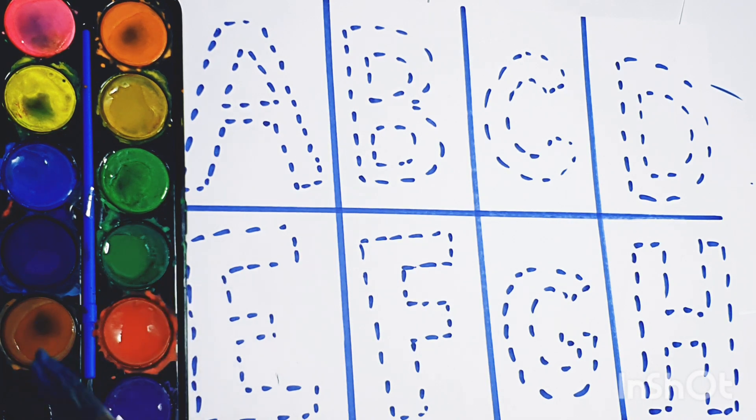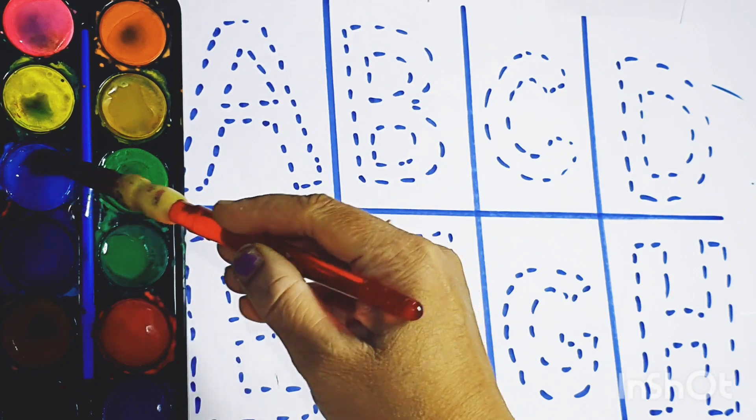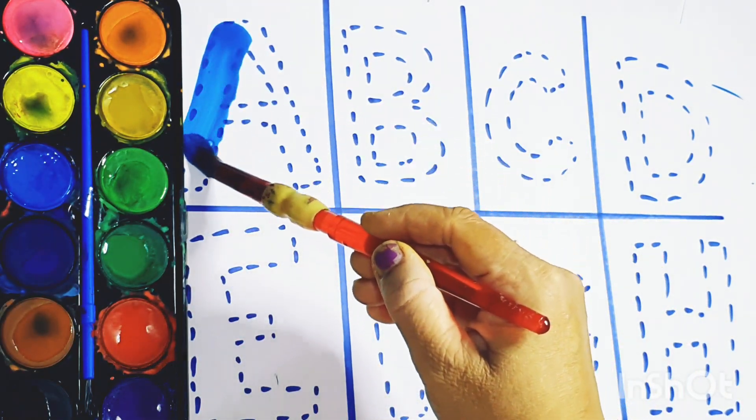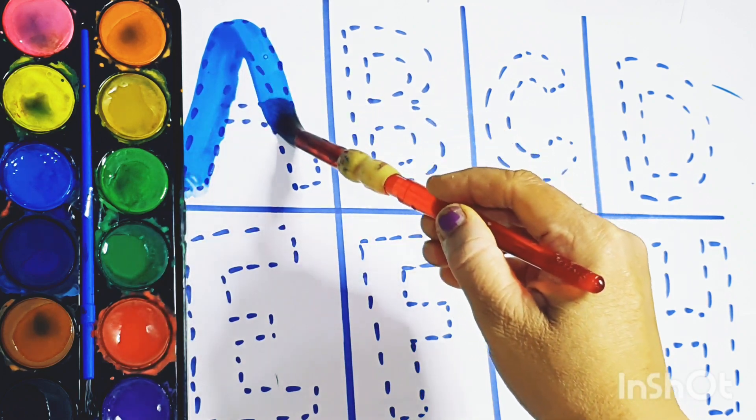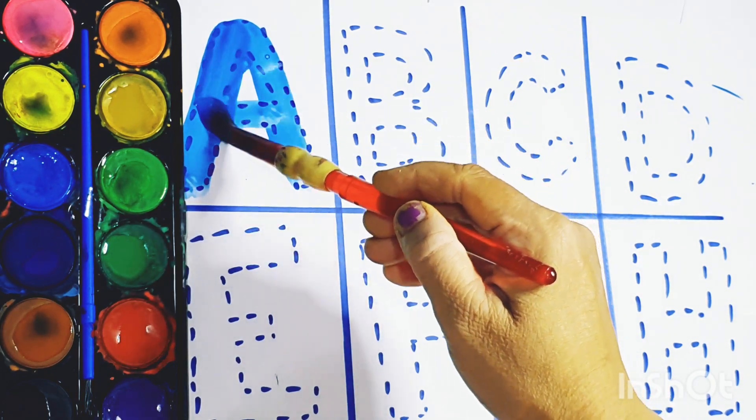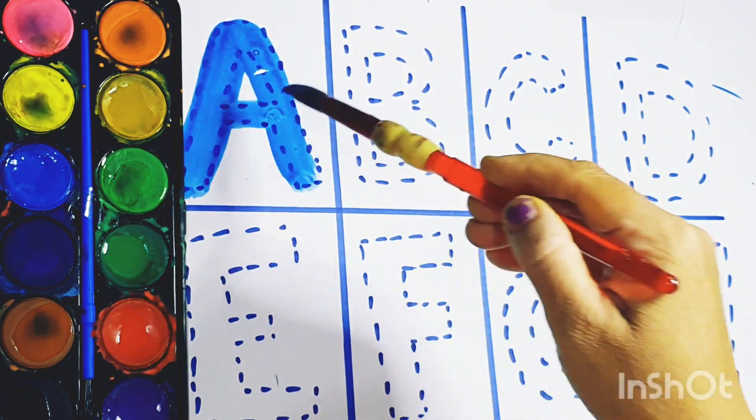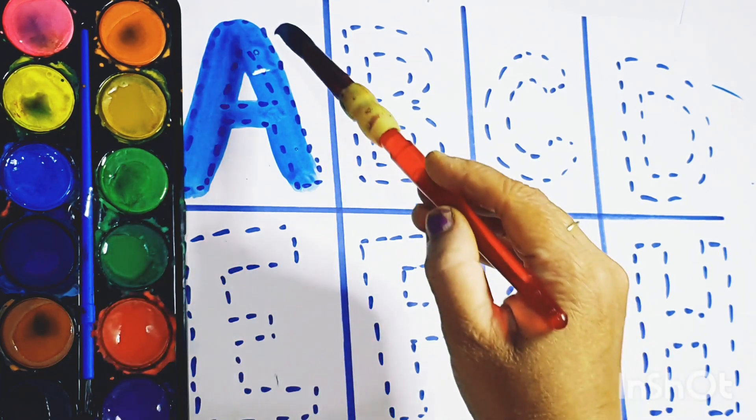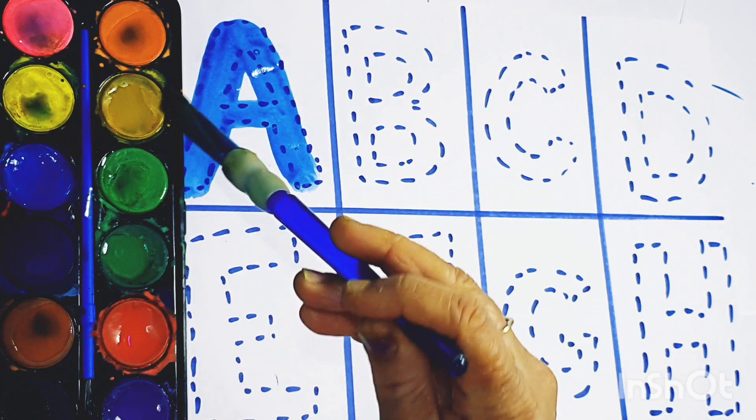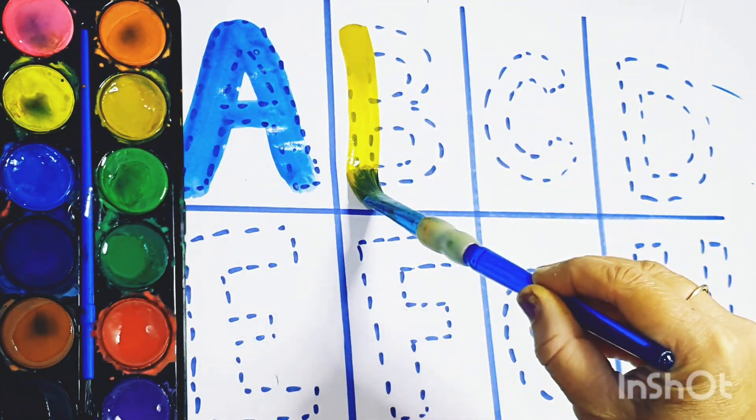We start with blue color. A. A for aeroplane. A for aeroplane. Yellow color.